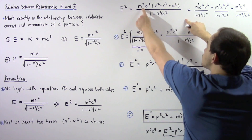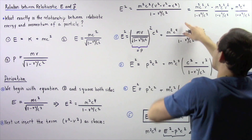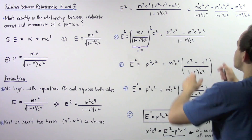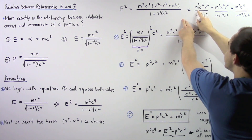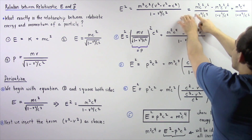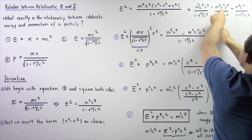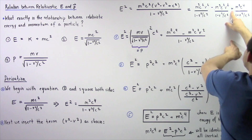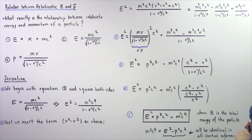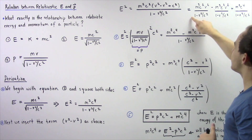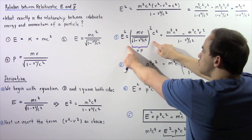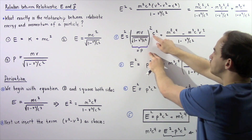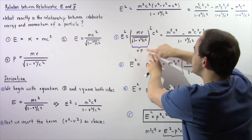Now let's distribute this term to each one of these terms. The denominator portion is the same for each term. We get m squared c squared multiplied by v squared over the denominator, minus m squared c squared multiplied by v squared, plus m squared c squared multiplied by c squared, or c to the fourth power. Another way to represent this term is: E squared equals the square of this quantity multiplied by c squared.